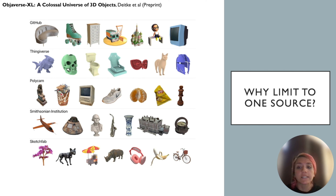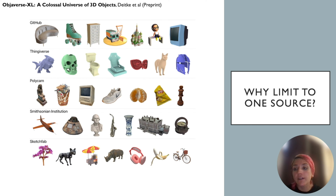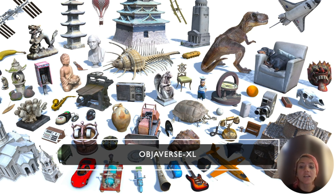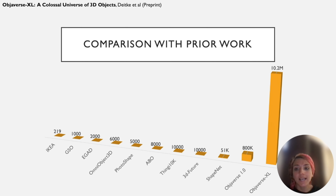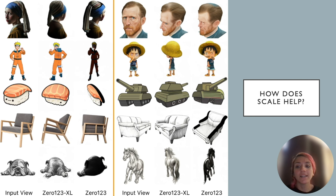3D object data exists in a multitude of formats, and that's why for Objaverse we limited ourselves to a single data source that offered uniform formatting. But there are numerous other resources that can further enhance the diversity of objects, so we introduced Objaverse XL, a dataset of over 10 million 3D objects. A substantial amount of effort was expended in unifying the data formats, eliminating duplicate entries, and ensuring successful rendering of textures and shapes. The outcome is a grand enhancement in scale and diversity, resulting in 10.2 million assets. Our experimental findings indicate that this scale-up led to a notable improvement in the performance of 3D generation models, paving the way for future applications.